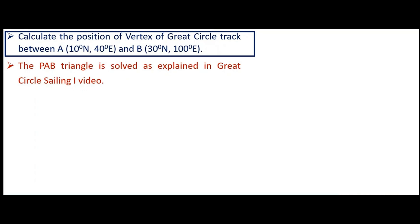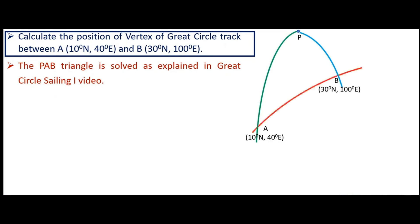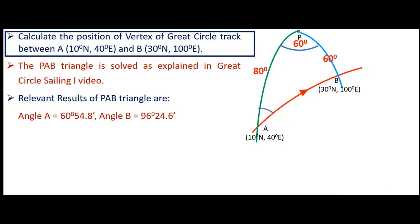But before that, let's make the diagram for this case. We have the pole, we have position A, we have position B, meridians of A and B connected by the GC track from A to B. We have PA as the co-latitude of A, PB as the co-latitude of B, and angle B as the D-longitude between A and B. Now, the relevant results of the solution to this PAB triangle from video one are: angle A = 60 degrees 54.8 minutes, and angle B = 96 degrees 24.6 minutes.